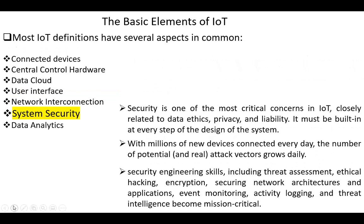The next element is system security. Security is one of the most critical concerns in IoT, closely related to data ethics, privacy, and liability. It must be built in at every step of the design of the system. With millions of new devices connected every day, the number of potential attack vectors grows daily. Security engineering skills, including threat assessment, ethical hacking, encryption, securing network architectures and applications, event monitoring, activity logging, and threat intelligence, become mission critical.